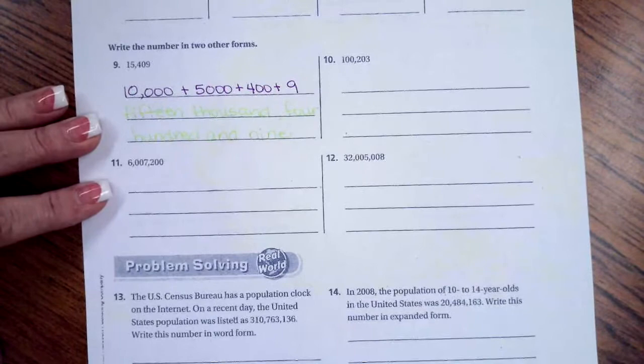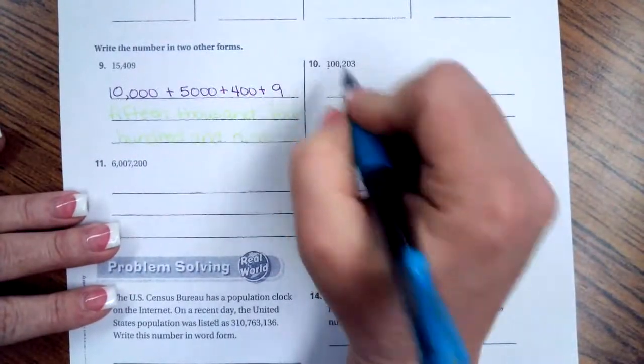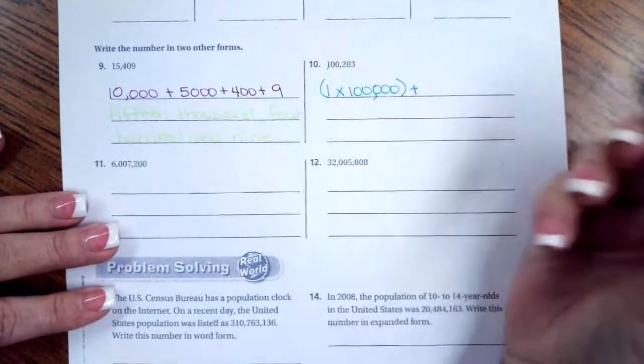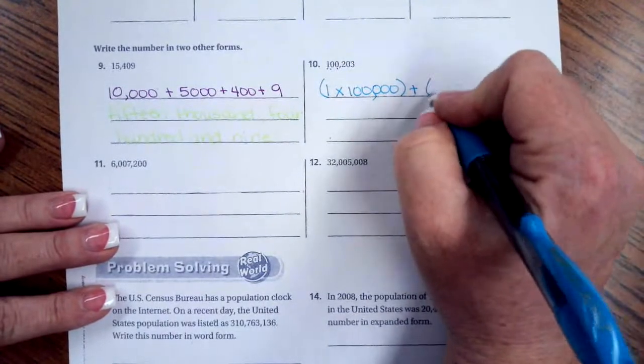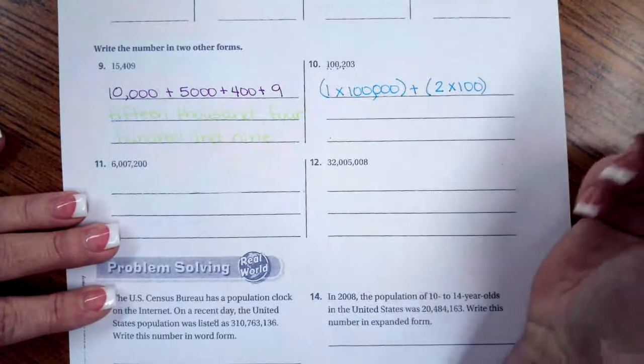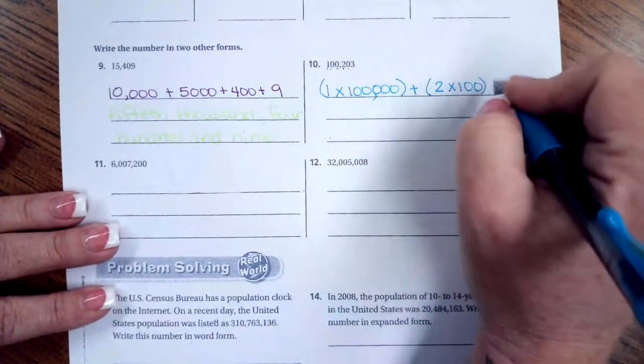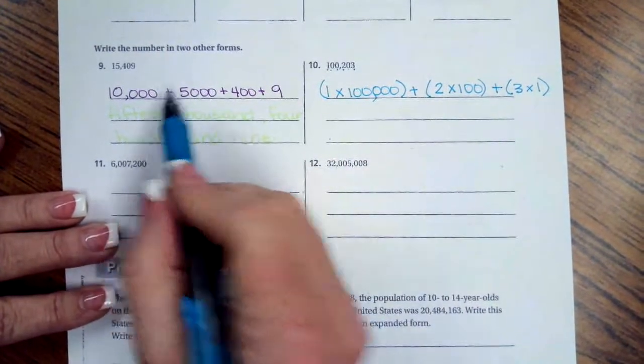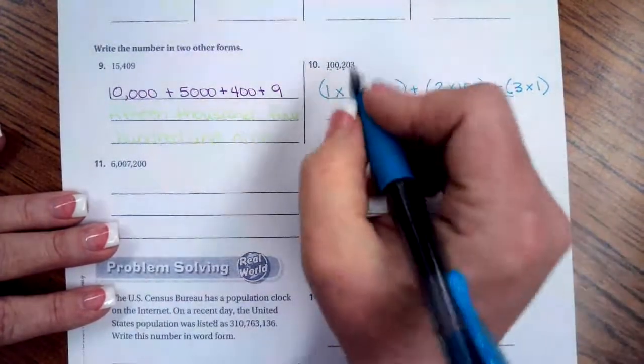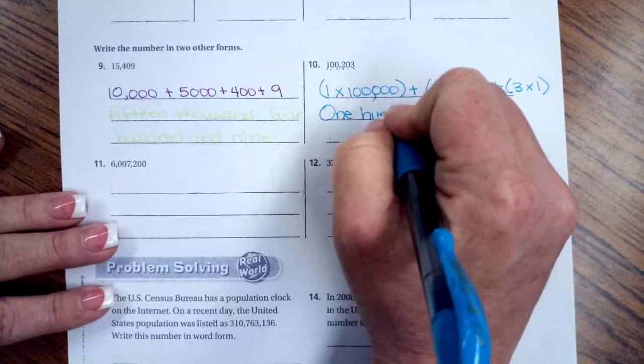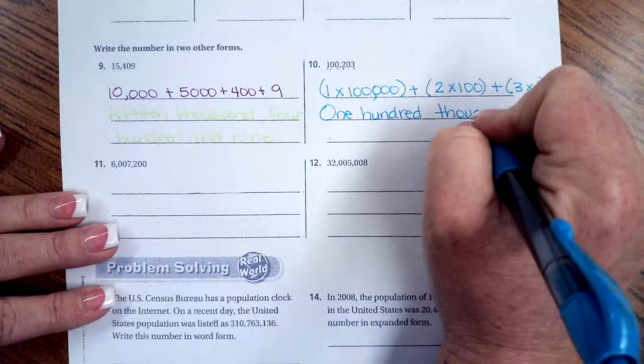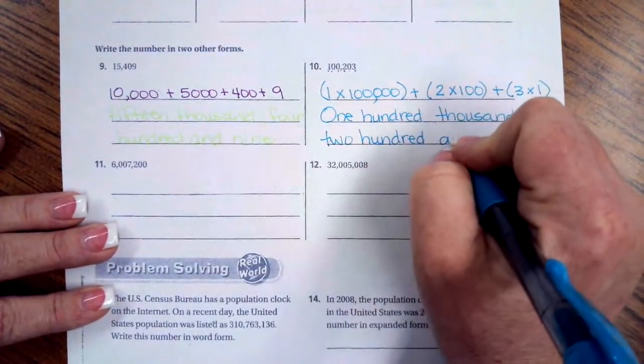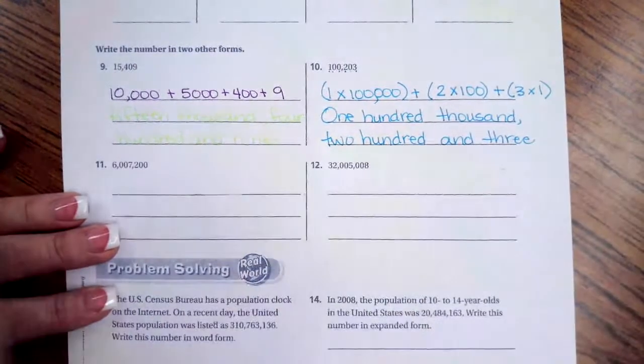The other way that sometimes they want you to do these is going 1, because that digit's a 1, times 100,000, because it's in the 100,000 spot, plus, there are no values for the zeros, so plus 2 times 100, because it's in the 100 spot. Then we have another 0. There's no value for that. And then we're going to say plus 3 times 1, because it's in the 1 spot. Some teachers will let you do it this way. A lot of them are going to want you to do it that way. So we're going to say 100,000, 203. There we go.